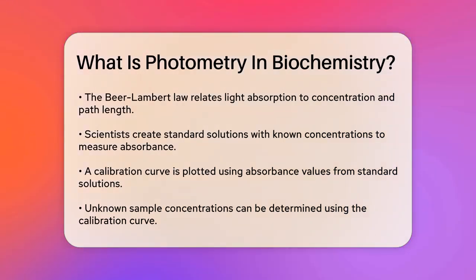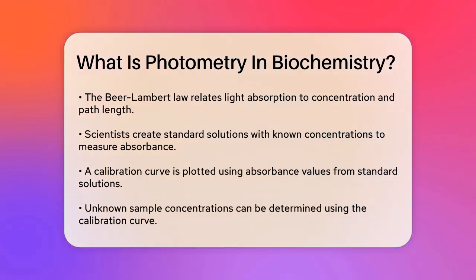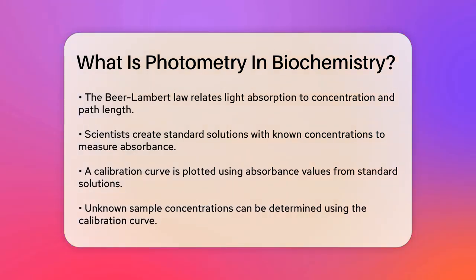In practical terms, scientists prepare a series of standard solutions with known concentrations and measure their absorbance. By plotting these values, they create a calibration curve. Then, when they measure the absorbance of an unknown sample, they can use this curve to determine its concentration.